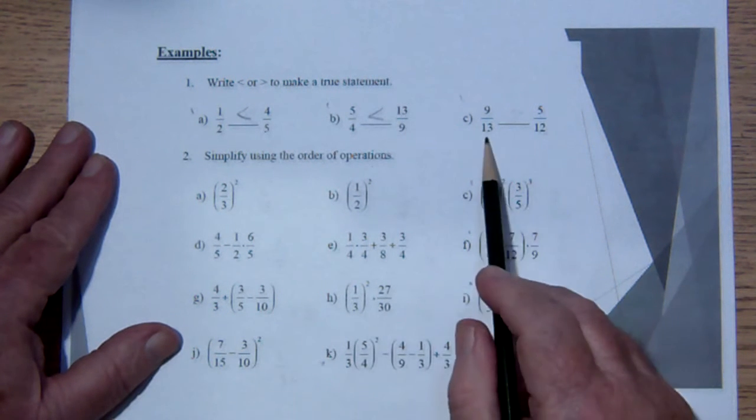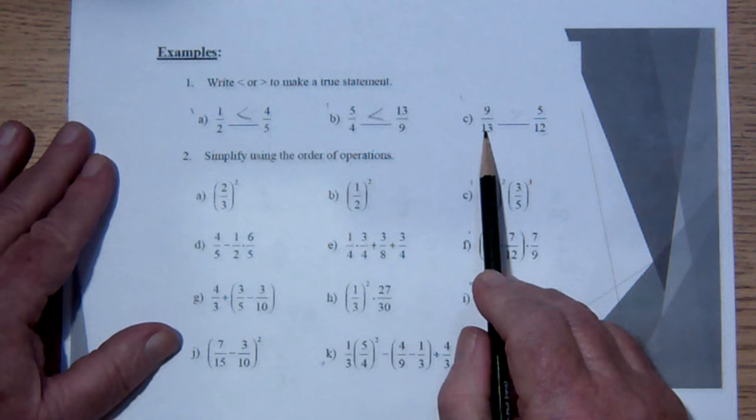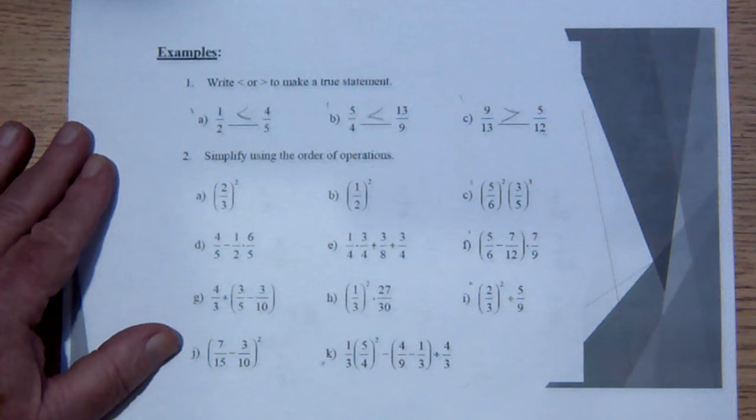And here we've got 13 and we've got 9 over 13 and 5 over 12. Now this number is more than half and that number is less than half and so we know without even finding the common denominator that they go that way.